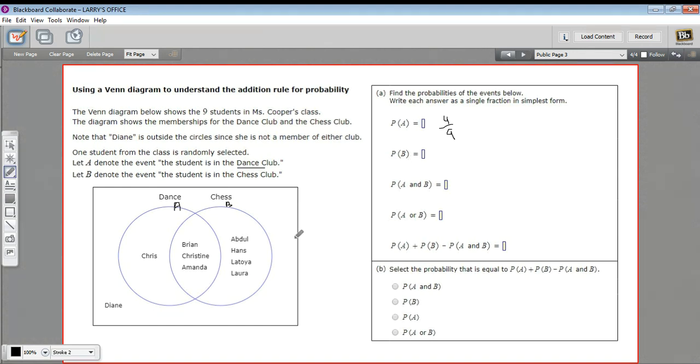Next, we want the probability of B. So belonging to chess club, we have seven in chess club. So that's seven out of nine students who belong in chess club. That's the probability of B.